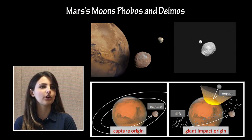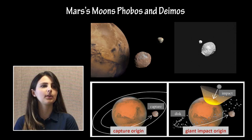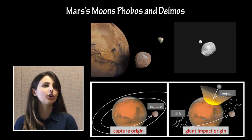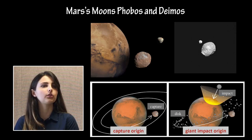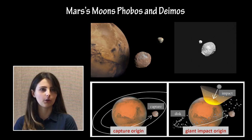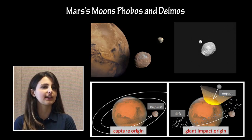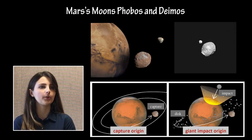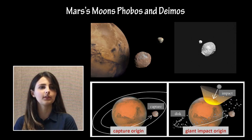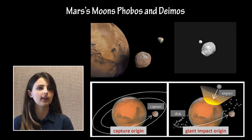Phobos and Deimos are large, rocky moons of Mars that exhibit surface geology characteristic of C or D type asteroids, supporting the hypothesis that both moons did not condense in orbit around Mars but were instead captured from the asteroid belt later in the solar system's history. Both moons are tidally locked to Mars. The most famous surface feature of Phobos is the large Stickney crater, while Deimos has only two named surface craters: Swift and Voltaire.